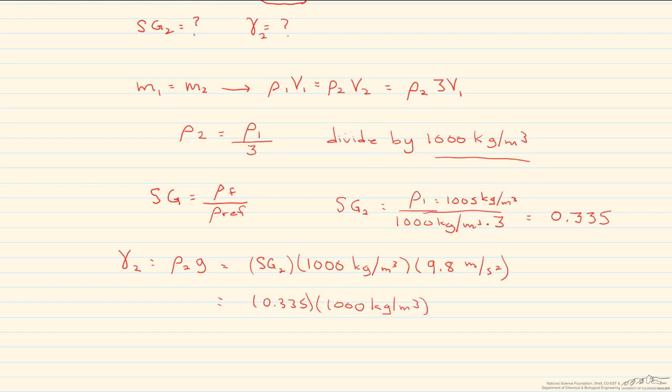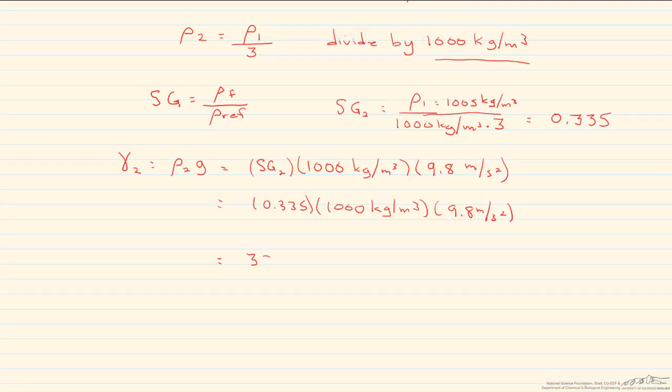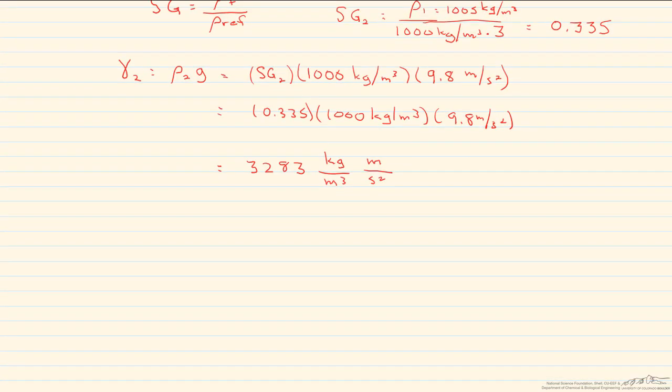And what we end up with is a value here of 3,283. Now take a look here at the units. This is the units here, kilograms per meter cubed, and here we have meters per second squared. So we're going to change this into kilogram meter per second squared times one over meter cubed. This is a newton, so our answer comes out to be 3,283 newtons per meter cubed.